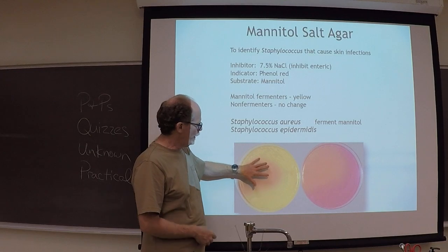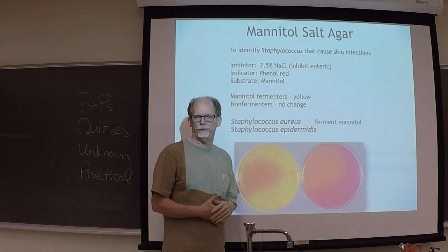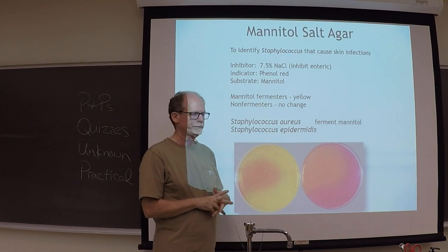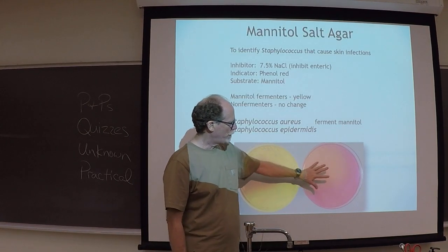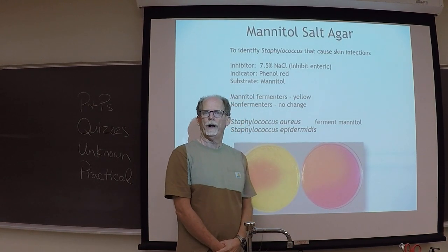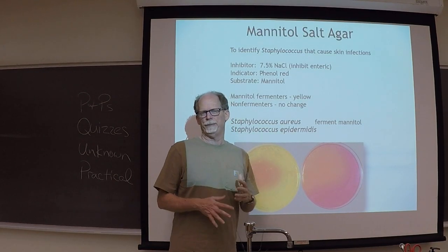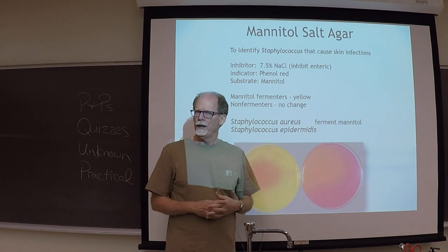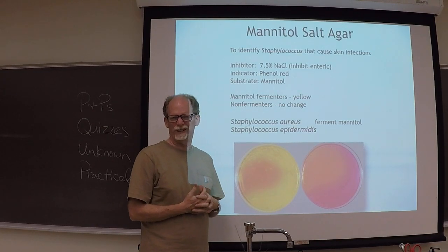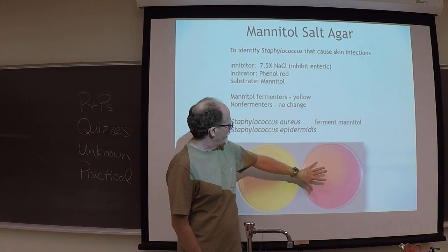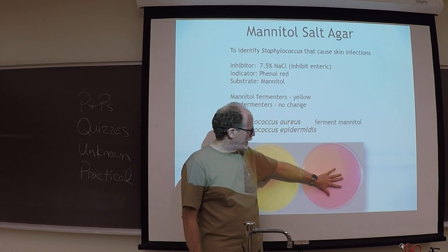Staph aureus ferments the mannitol contained in the media — it's a carbohydrate, like glucose, a sugar. If they have the enzymes to break it down, the pH goes down and this media becomes yellow. If they grow on the media and it doesn't change to yellow, then it's normally Staph epidermidis, which doesn't usually cause major problems and is normally found on your skin. Staph epidermidis doesn't ferment mannitol, the pH doesn't change, and it remains red.